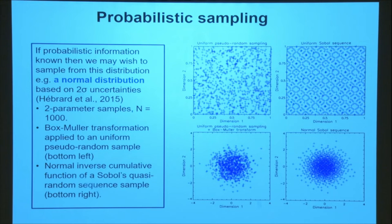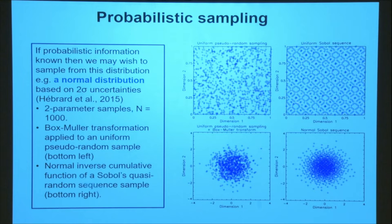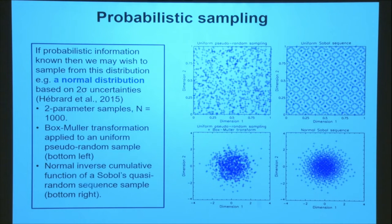This is an example from a butane oxidation study showing the difference between sample distributions. On the left, just a normal pseudo-random number generator — you can see holes and clusters in the sample. On the right is the low discrepancy Sobol sequence, sampling from a probabilistic distribution, and you can see a much nicer behaviour compared to the normal random sample. So after doing all this work, we always use Sobol sequences now for the propagation of uncertainties.